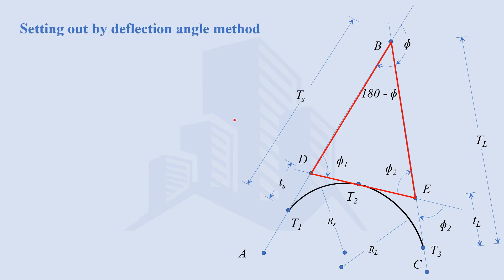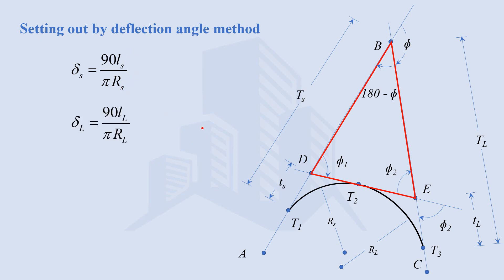For setting out a compound curve, this can be done by any method but the most commonly used is the deflection angle method. Since the compound curve comprises two simple circular curves, the procedure is the same as for a simple circular curve. The small circular curve is set out first, and once it is done, we start setting out the large curve. The formula for the small deflection angle is 90L over pi R — for the short curve, the peg interval and radius of the short curve are used; similarly for the long curve, the peg interval and radius of the long curve are used.